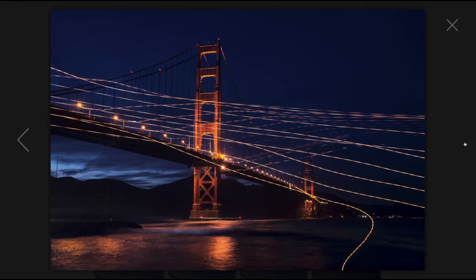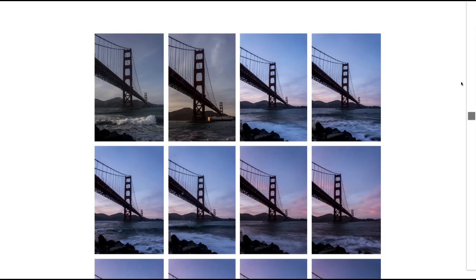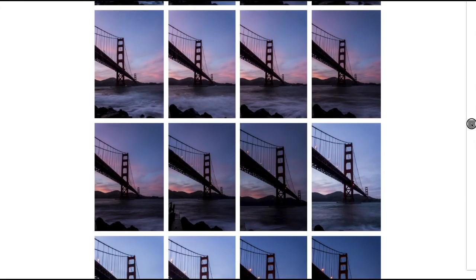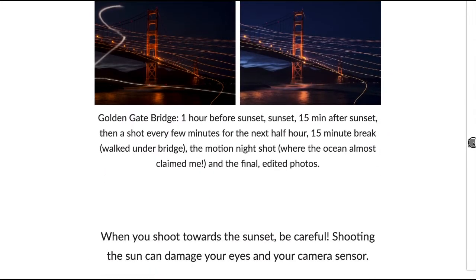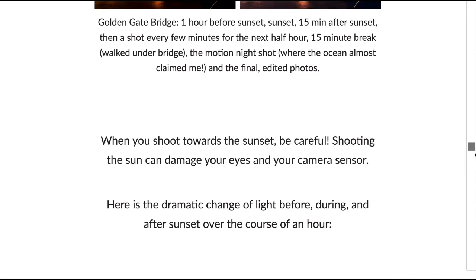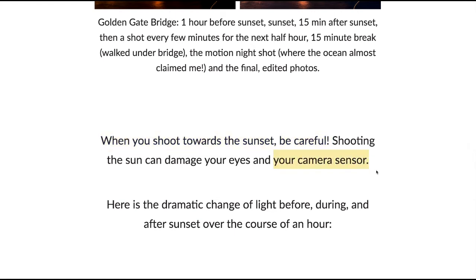There's a mysterious white light in the photo I couldn't explain, which I photoshopped out using retouching tools. That ended up being one of my favorite photos. You can also shoot towards the sunset, but be careful — shooting the sun can damage your eyes just like looking at it, and it can also damage your camera sensor. If there's a dark spot on every photo you take, your sensor may have been damaged from photographing the sun.